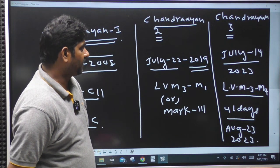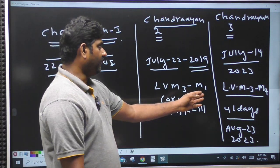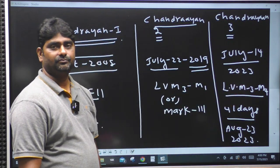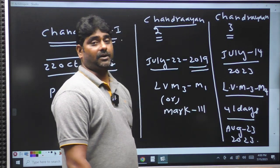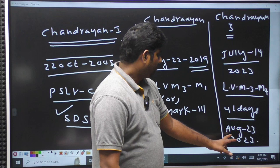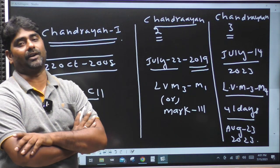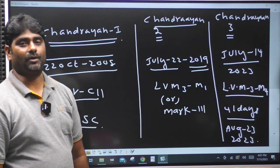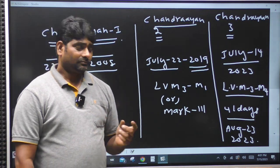Chandrayaan-3 was launched on July 14, 2023. It weighs 3.9 tons and used the LVM3-M4 launch vehicle. It took 41 days to travel to the Moon, landing on August 23, 2023. The reason for the 41-day journey is to align with the start of the lunar daytime, which lasts 14 days.